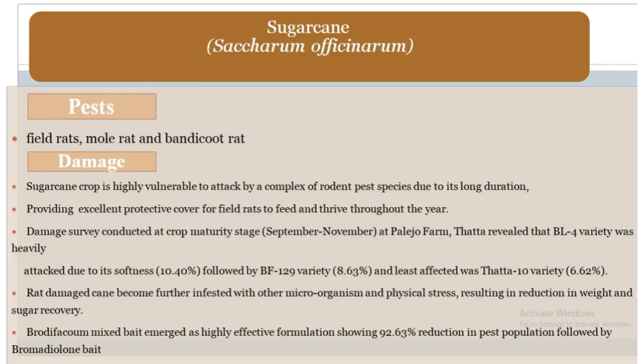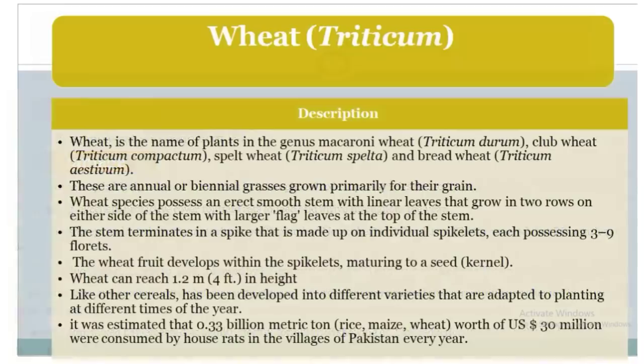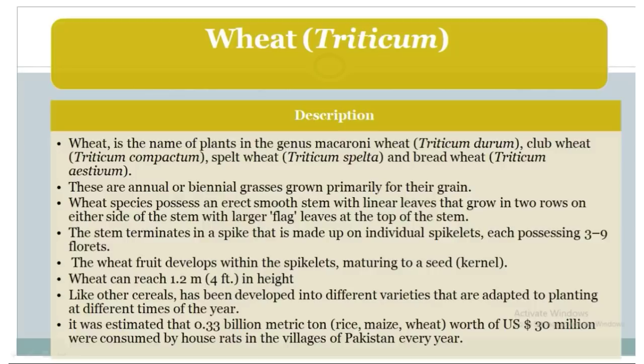Wheat (Triticum) description: wheat is the name of plants of the genus Triticum. Triticum durum is durum wheat, Triticum compactum is club wheat, Triticum spelta is spelt wheat, and Triticum aestivum is bread wheat. These are annual or biennial grasses grown primarily for their grain. Wheat species possess an erect smooth stem with linear leaves that grow in two rows on either side of the stem, with a larger flag leaf at the top.